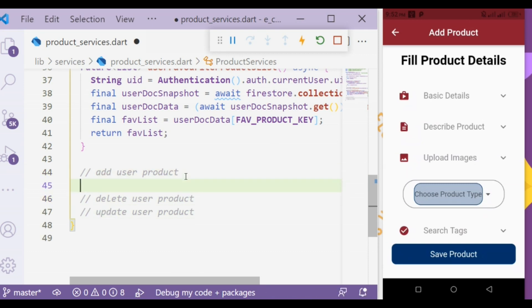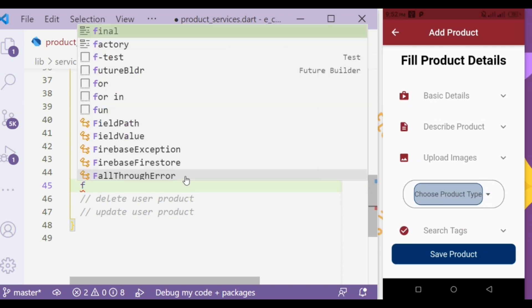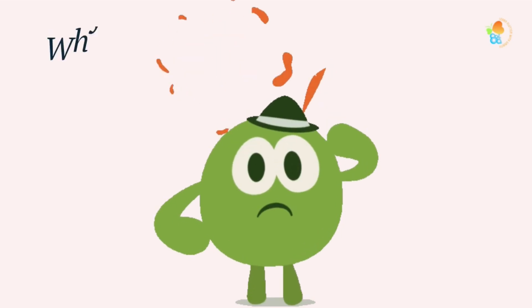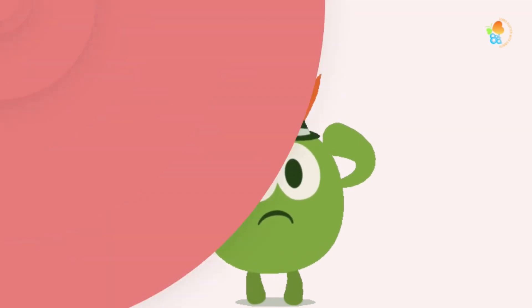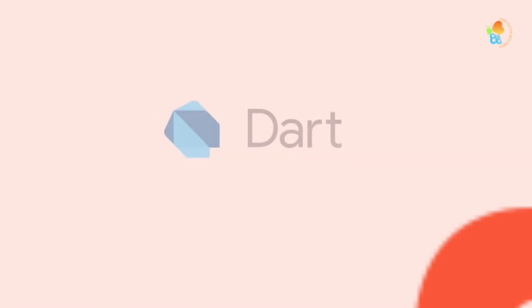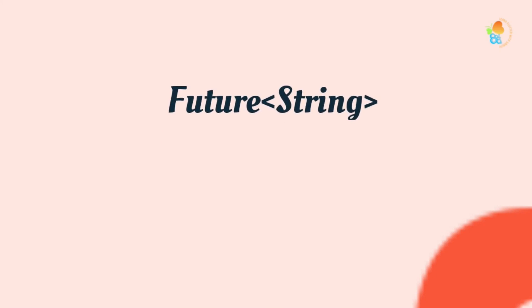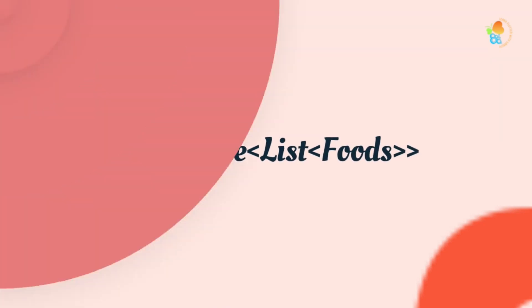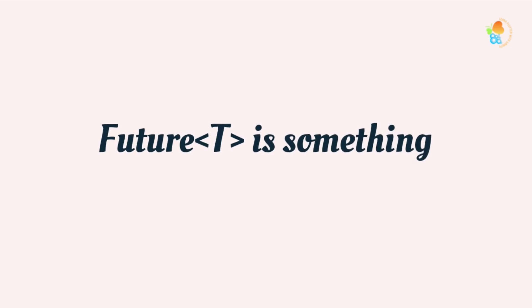We will start with the add user product function. First we will create a Future function. You may be asking why a Future function. Since a method that takes some time cannot return immediately, it will return the promise of delivering a value when it's done — that's called a Future. Like the promise to load a number from the database would return a Future integer, the promise to load images would return a Future string, and returning a list of foods from an API would return a Future list of foods. You can think of Future<T> as something that in the future will give us a T.